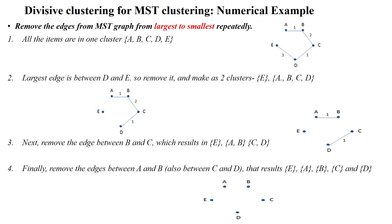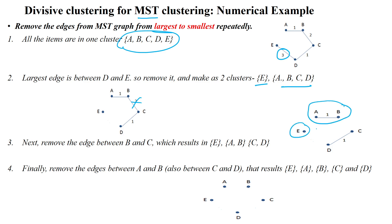So based upon the divisive clustering approach from MST clustering: first we will select the largest edge from the group of edges, then the largest edge will be removed from the cluster, then you will get individual data points, and then again select the next largest edge — and you will get some more clusters.